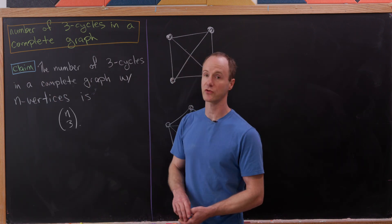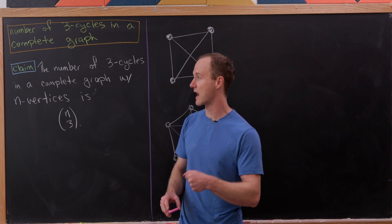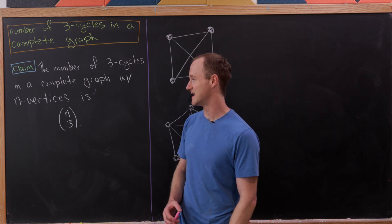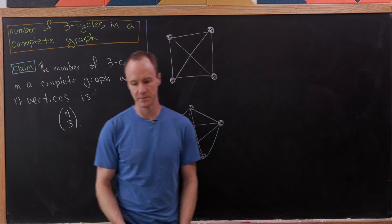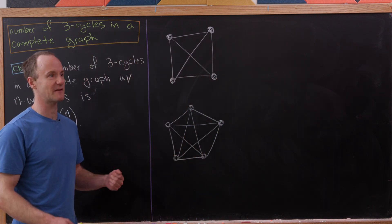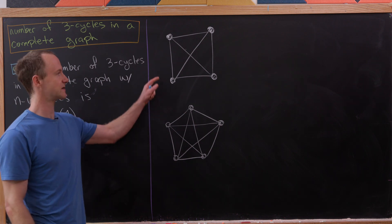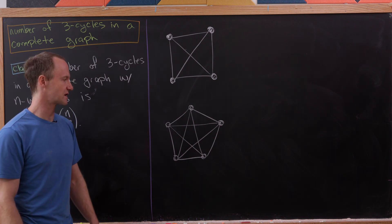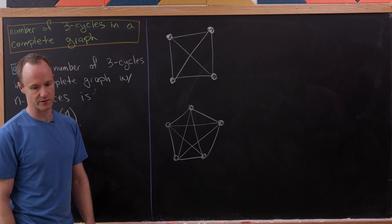We'll prove that the number of three cycles in a complete graph with n vertices is the binomial coefficient n choose 3. As a little exploration, let's see that this holds in these two cases: this complete graph on four vertices, and over here, this complete graph on five vertices.